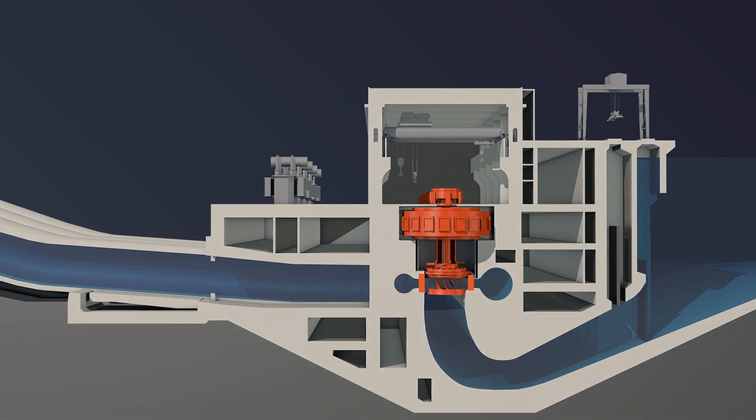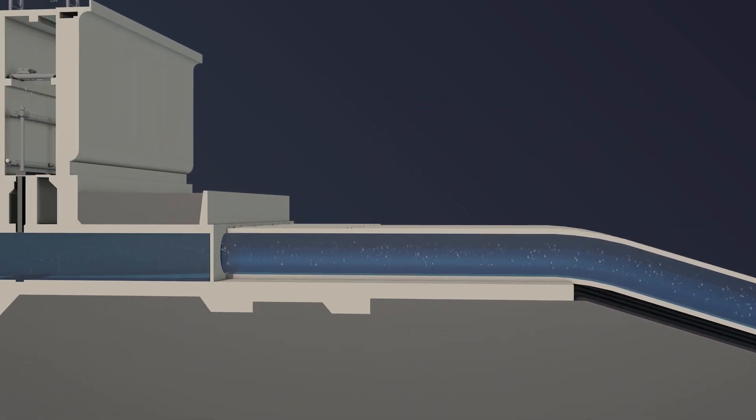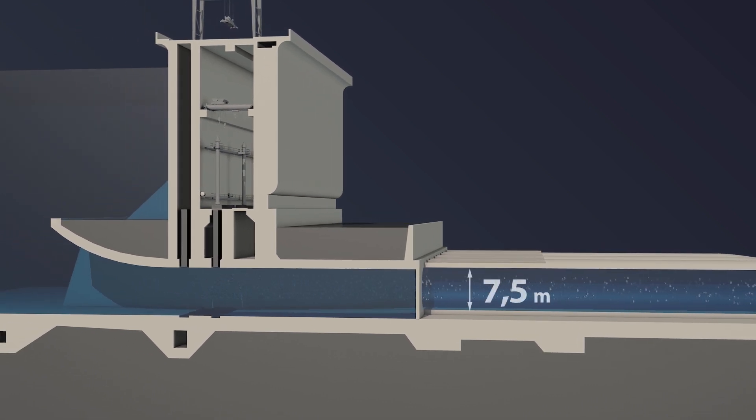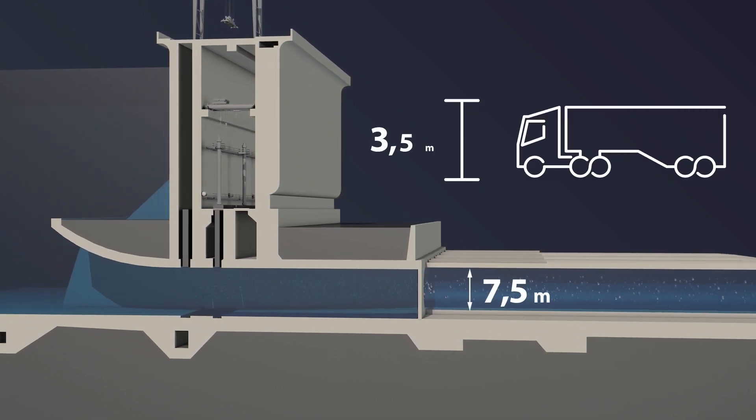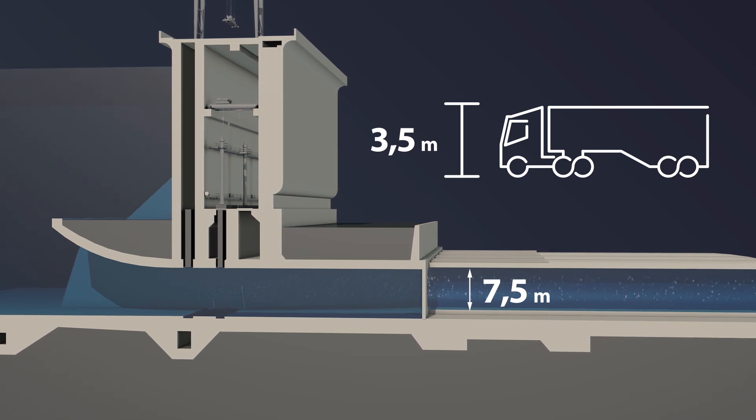During times of low demand and low prices for electricity, especially at night and during weekends, excess generation capacity is used to pump water into the upper reservoir from the lower reservoir through the penstocks. These pipes are 7.5 meters in diameter and could hold an entire truck.